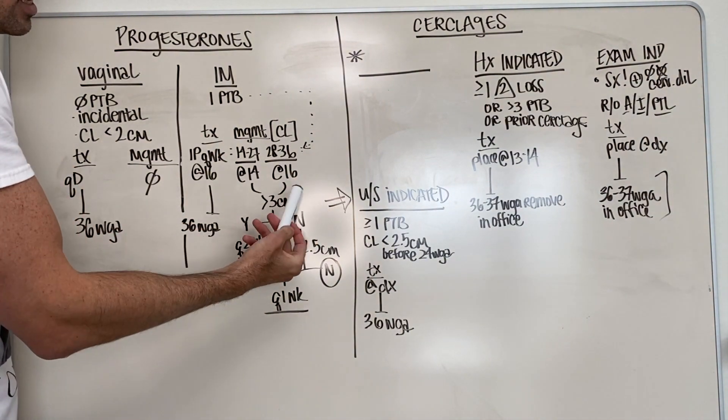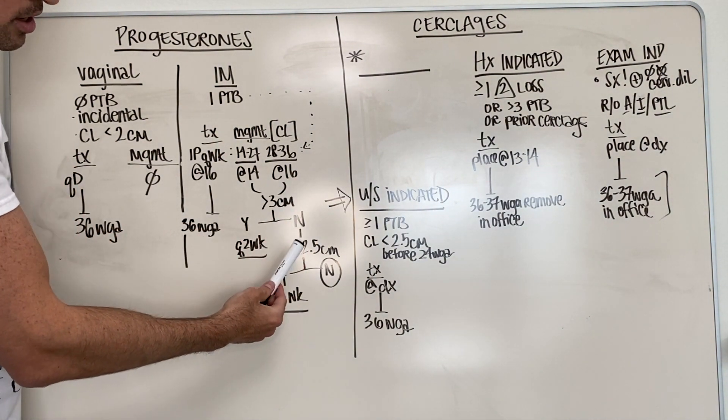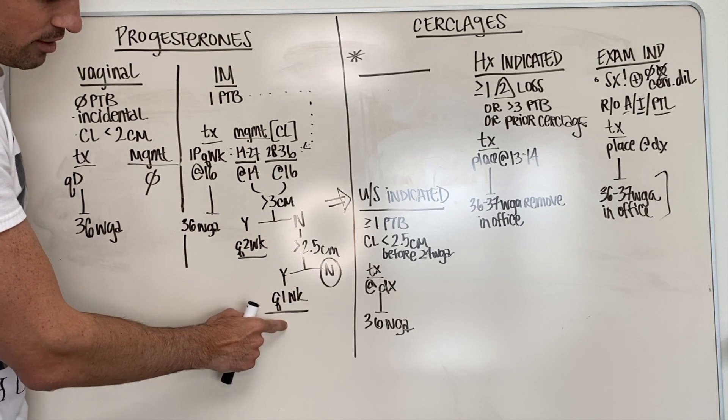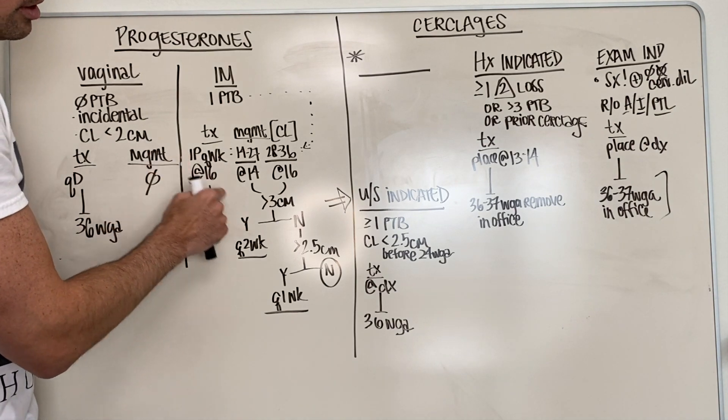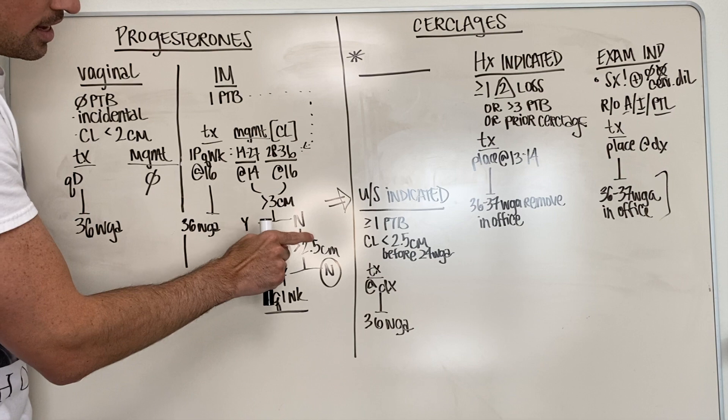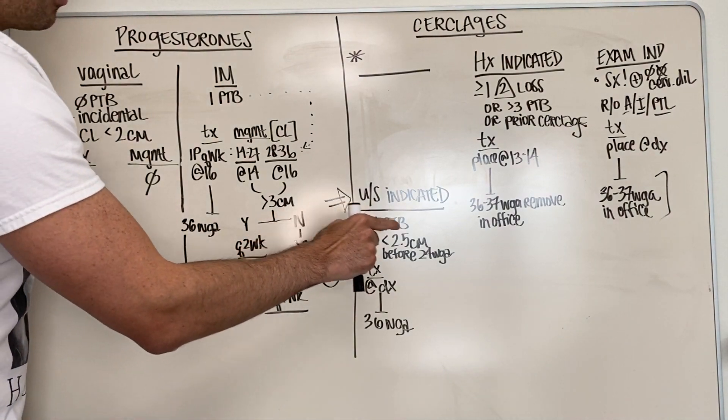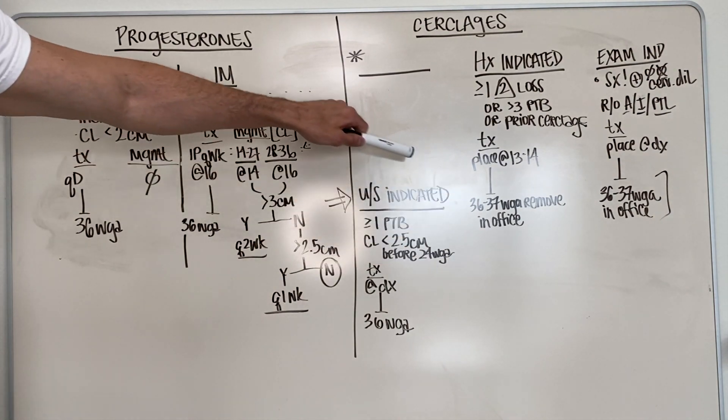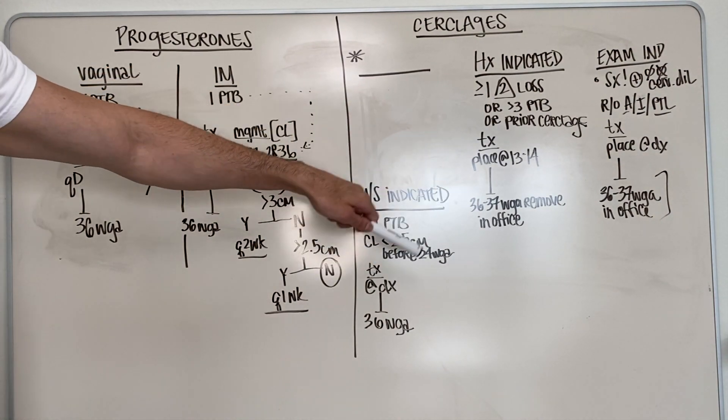Now if it's less than three centimeters but greater than two and a half, then they're going to be still getting weekly transvaginal and weekly progesterone. Now if they had a history of preterm birth, you do the cervix, it's less than two and a half, and they're before 24 weeks of gestation, then they rule in for an ultrasound indicated cerclage.